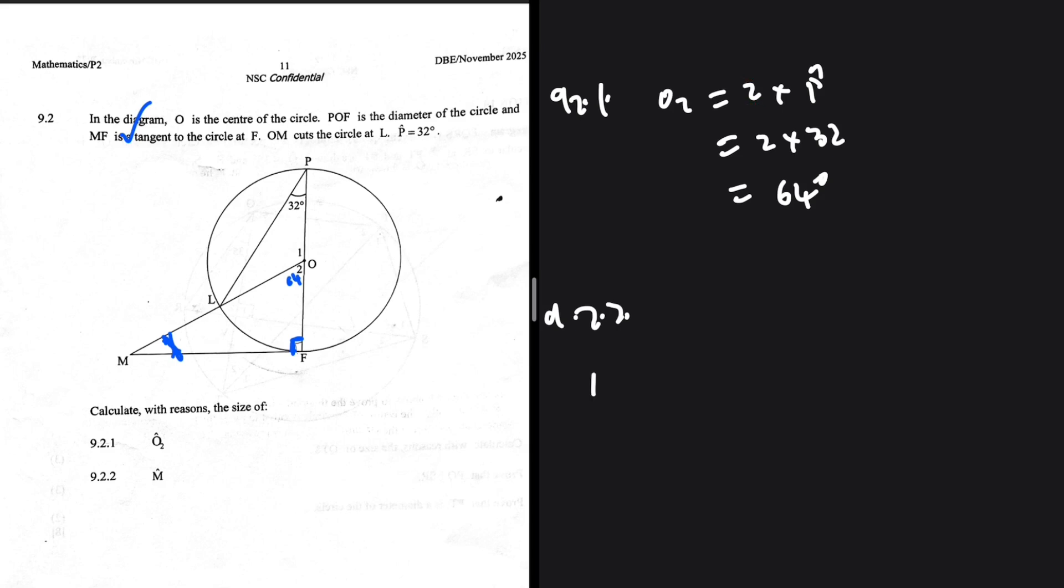So angle M is equal to 180 minus 90 minus 64. Sum of angles in a triangle, right? So the size of angle M, let me just press that in my calculator: 26. So M is 26 degrees. So that is question 9.